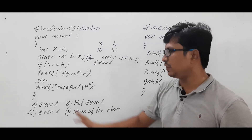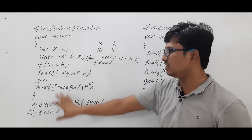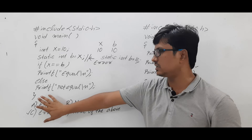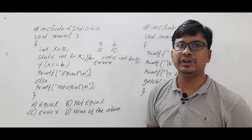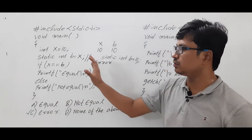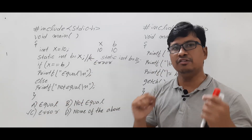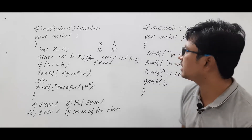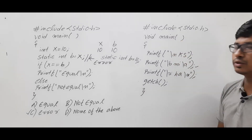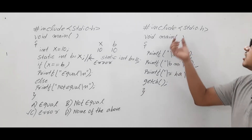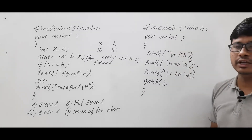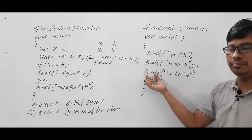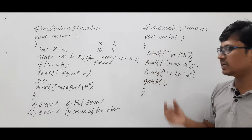So if you execute this program, you will get an error. The right answer for this question is 'error', because when initializing a static variable you must use a constant, not a variable. I hope that is clear. If you still have any doubts about question number one, feel free to ask in the comment section. Now let's look at question number two: '#include stdio.h', 'void main', with three printf statements and a 'getch()'.